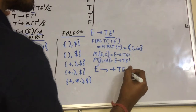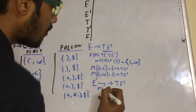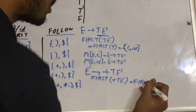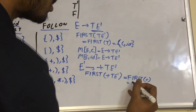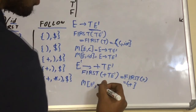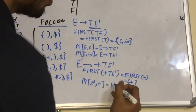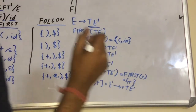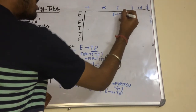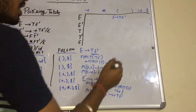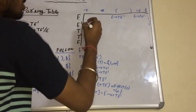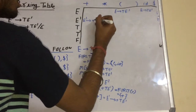Take the next production: E'→+TE'. We calculate FIRST(+TE'), which is FIRST(+), which is just plus. So we put M[E', +] = E'→+TE'. So: M[E, '('] = E→TE', M[E, id] = E→TE', and M[E', +] = E'→+TE'.